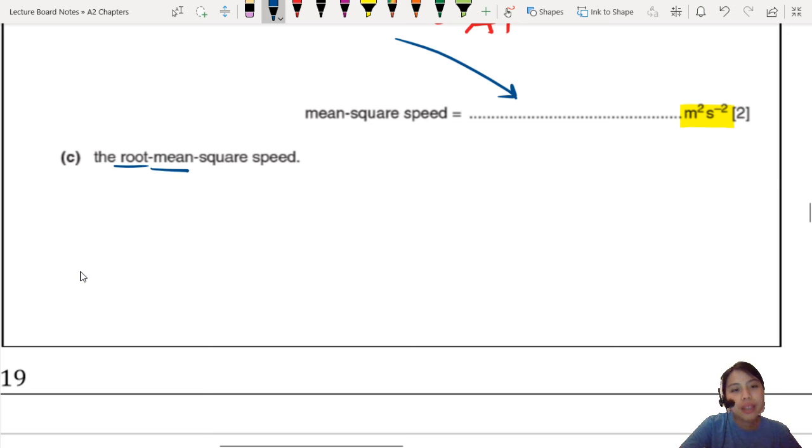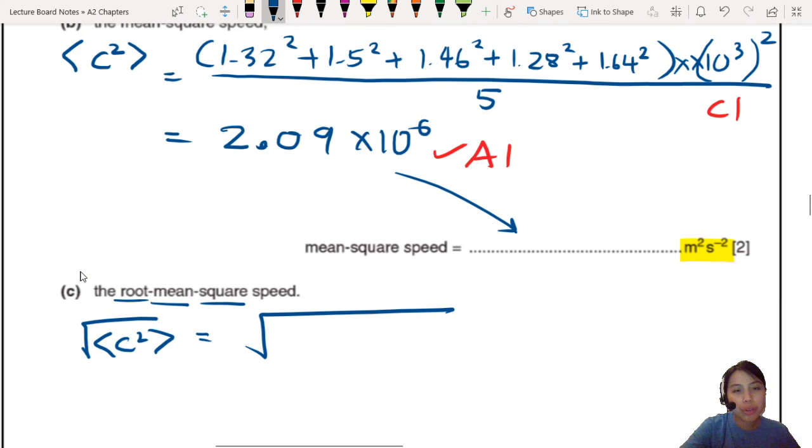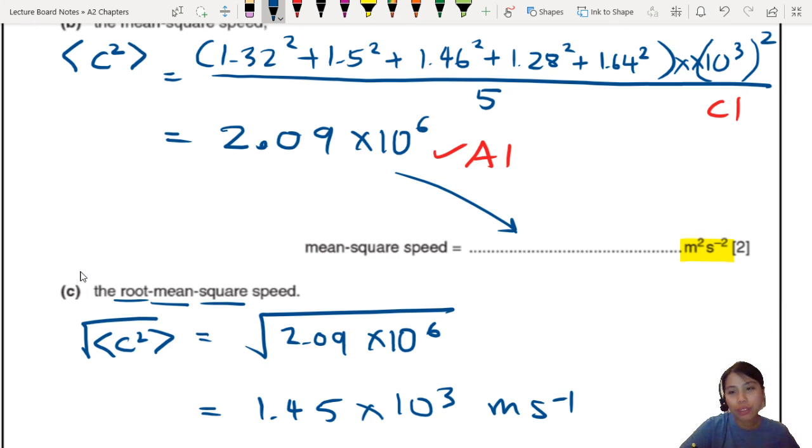So root mean square literally goes like this. Root mean square speed. So what you need to do is just square root your mean square. So I just take that, 2.09 times 10 to the negative 6. Oh, that's 6. Oh my. This is 6. My writing is such beauty. So this will be 6, and here will also be 6. There we go. So you calculate that, you should get about 1.45 to 3SF times 10 to the 3 meters per second. Because you square root this unit, you should get meters per second.